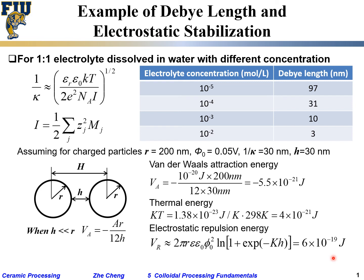It means the Van der Waals attractive energy or force is not enough to overcome the repulsive force. Otherwise, they are going to stay happy at a certain nanometer separation or even longer.